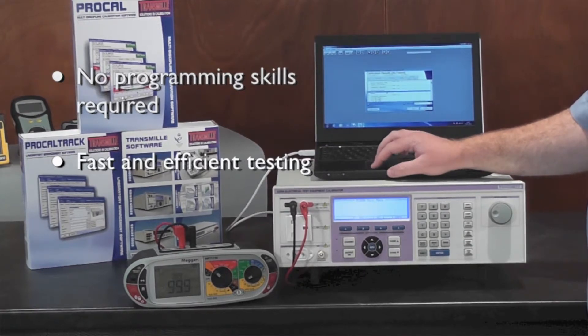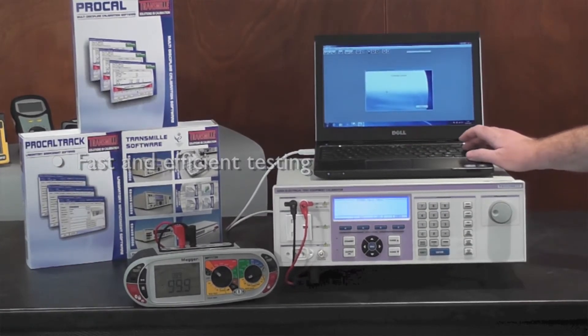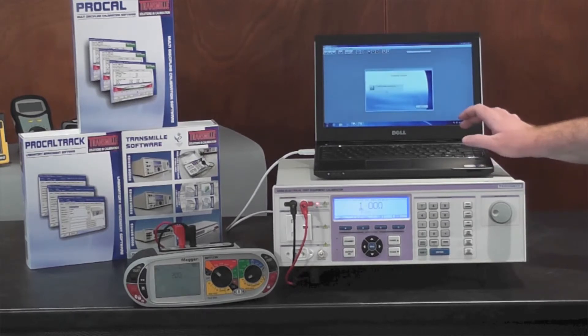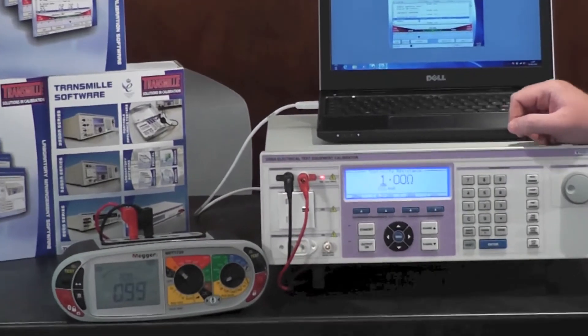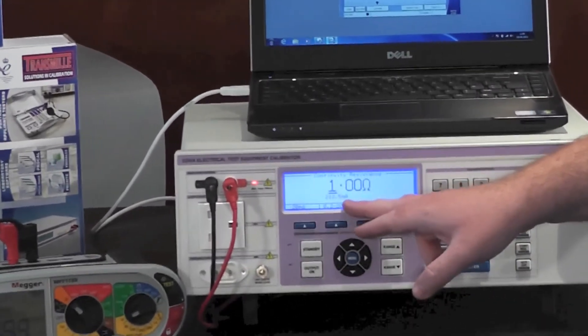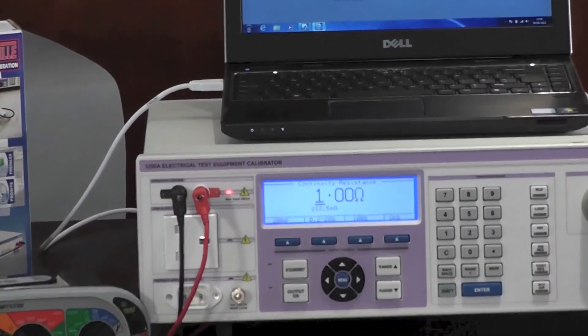For example, measuring continuity current from this tester. I press next, it automatically sets the 3200A to the correct range and begins to read back the continuity current measured from the tester.